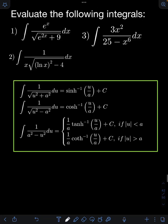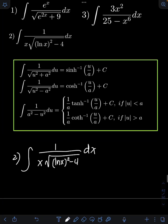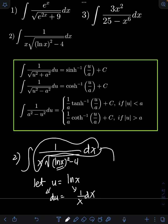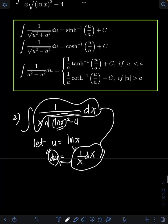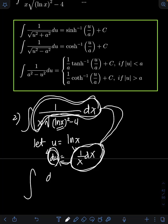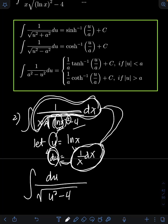So the final answer for number 1 is arcsinh(e^x / 3) + C. For number 2, we have the integral of 1 over x times √((ln x)² − 4) dx. Let's apply u-substitution: let u equal ln x. Getting the derivative of both sides: du equals 1/x dx. Notice we have the term 1/x dx on the original integral, which now equals du. Substituting gives du over √(u² − 4).